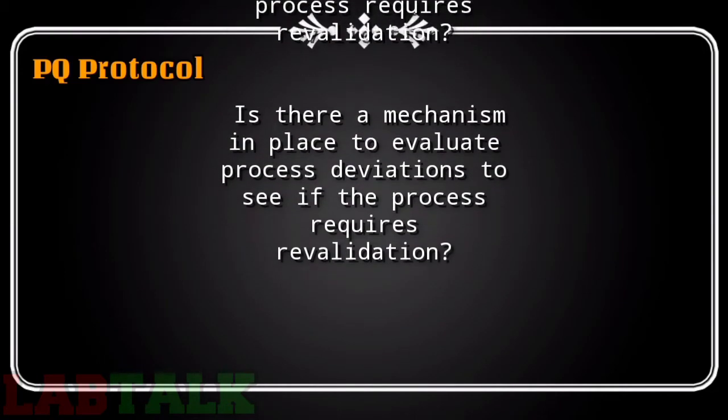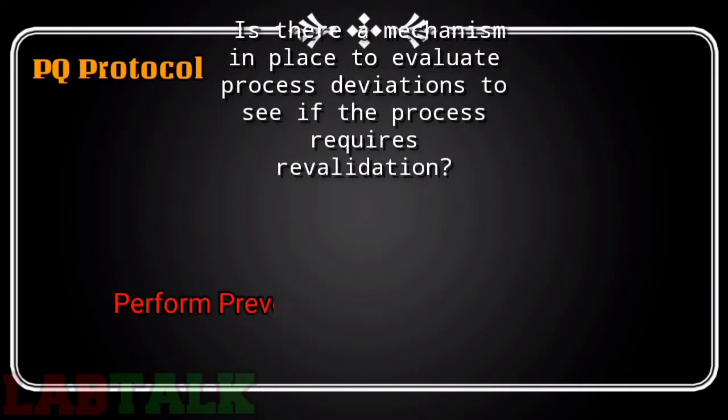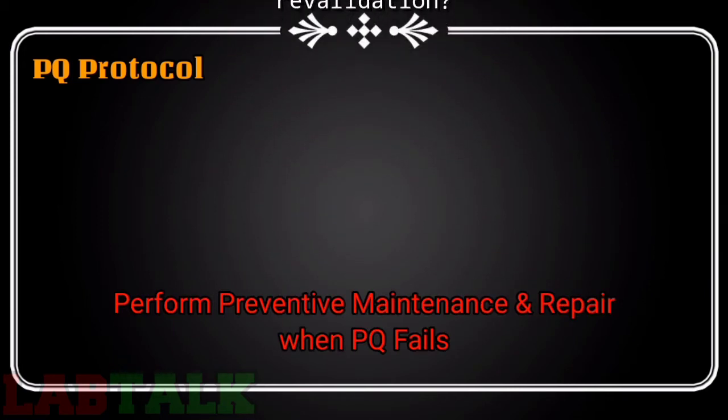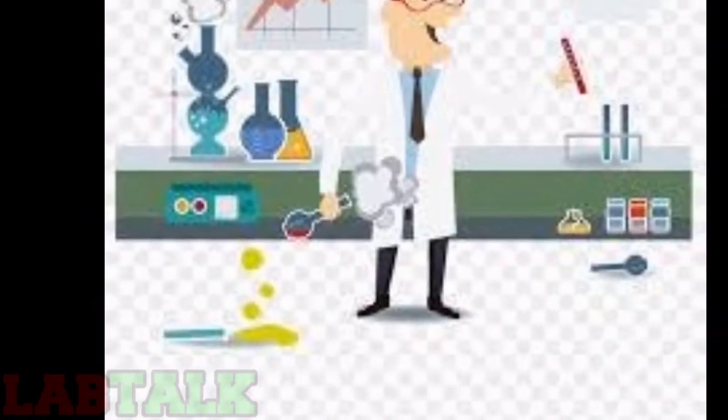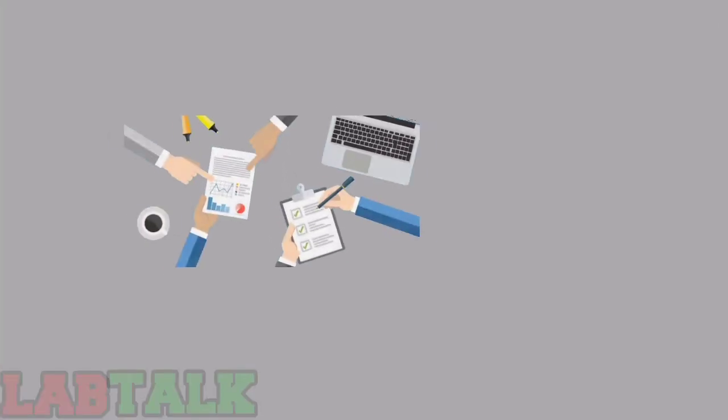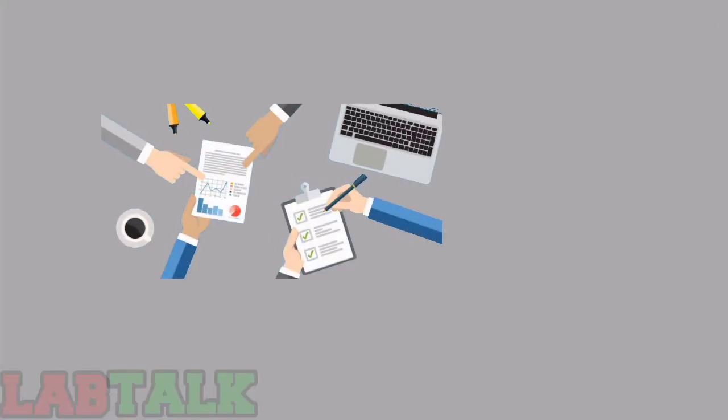Preventive maintenance and repairs should be performed when a PQ test fails to meet specifications. The instrument requires maintenance or repairs. Now, how to prepare a PQ report or what are the contents of the PQ report? The documentation of the PQ report is most important and is a continuous process.